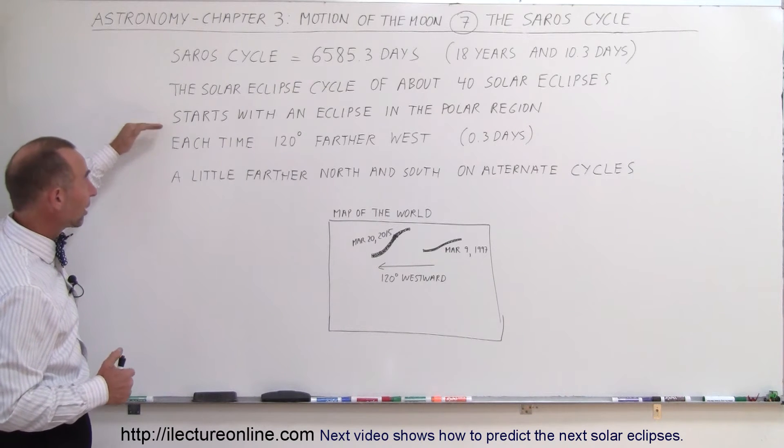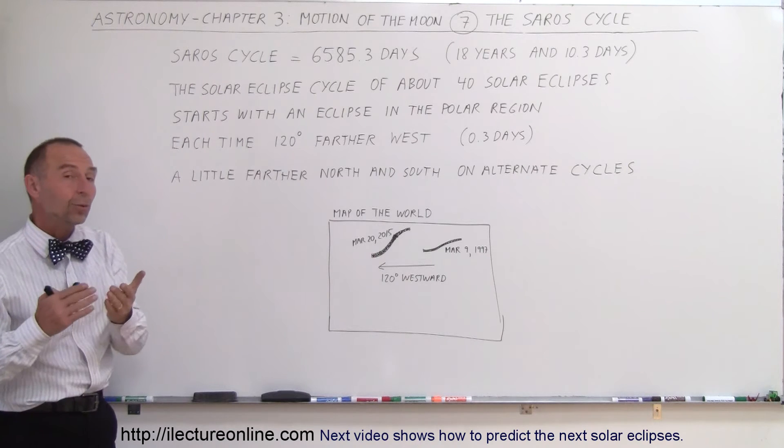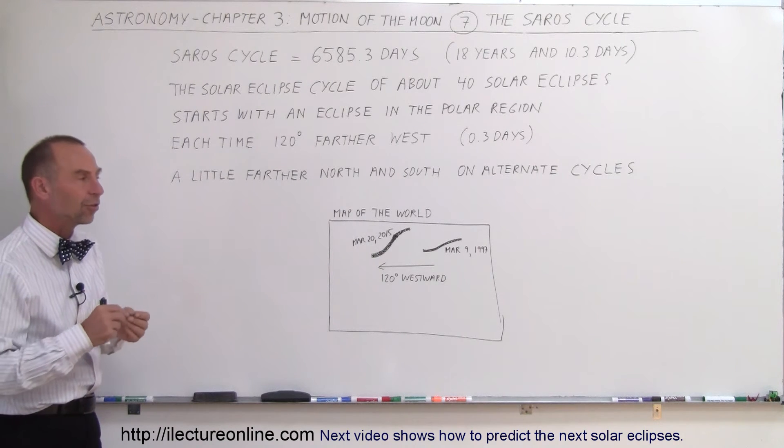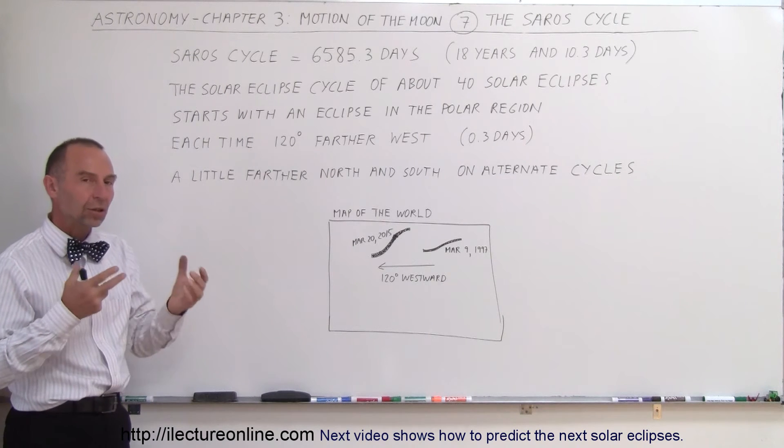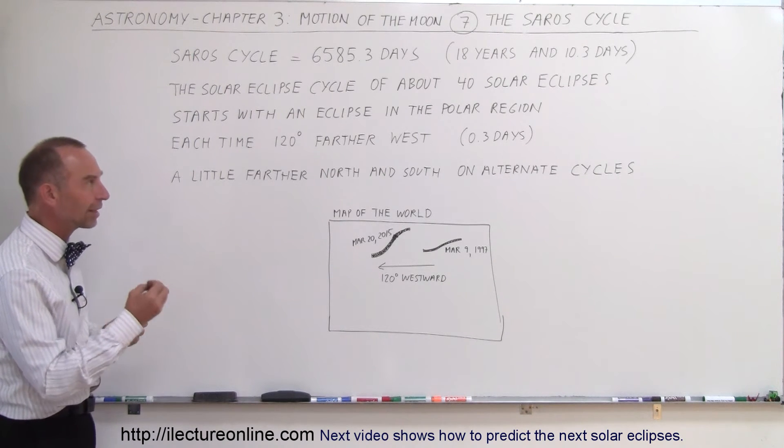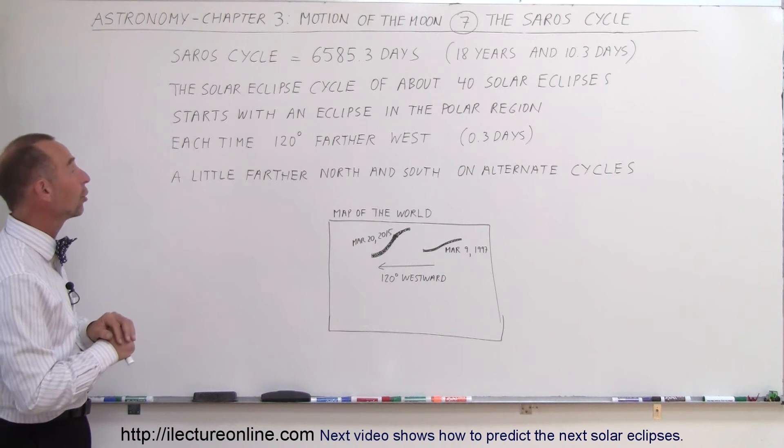The whole cycle starts with an eclipse in the polar region and covers about 40 eclipses. I say about because it could potentially change on occasion when the conditions are just right, but the Saros cycle typically contains exactly 40 solar eclipses.